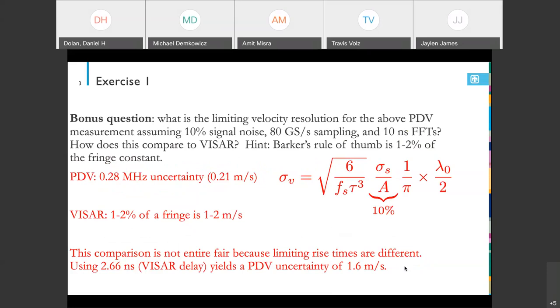There was a bonus question with this exercise asking, what is the limiting velocity resolution for the above PDV measurement if you assume 10% signal noise, 80 gigasamples per second sampling, and a 10 nanosecond fast Fourier transform? In the lecture, I'd given this formula, this is the limiting uncertainty, where you've got the sample rate in the denominator, the analysis timescale tau is in here, that's 10 nanoseconds. This ratio, sigma s is the signal, sort of the noise, RMS noise here, and a is the amplitude. So the noise fraction, this ratio is 10%. There's a factor of pi and then half a wavelength to turn frequency into velocity. What you come up with these numbers is about 0.28 megahertz, which is 0.21 meters per second, is your limiting velocity resolution. So that's the best you could ever do with this equipment and that Fourier transform.